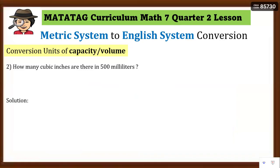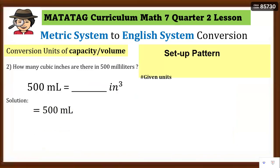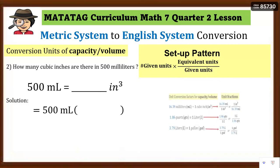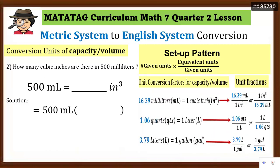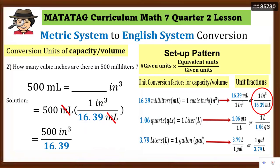Number 2: how many cubic inches are there in 500 ml? Write the equation first and set up the pattern. Since the given unit is ml and we need to convert to cubic inches, we place ml in the denominator to cancel it, with cubic inches in the numerator. So we use 1 cubic inch over 16.39. Cancel the ml units, then multiply: 1 cubic inch times 500 = 500, divided by 16.39 equals 30.51 cubic inches.